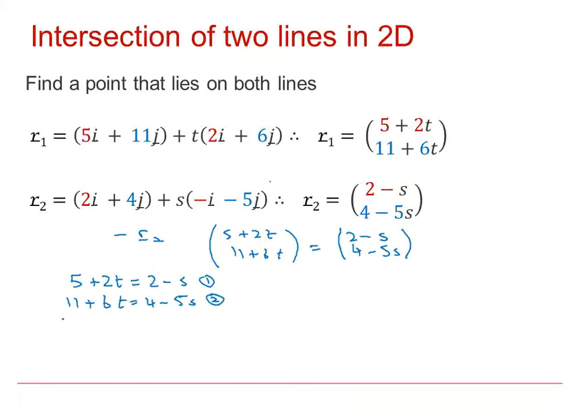Various ways of solving these simultaneous equations. I'm going to triple equation 1 to get 15 plus 6T is 6 minus 3S. And then I'm going to do equation 3, take away equation 2. So we've got 15 take away 11 is 4, 6T take away 6T cancels, 6 take away 4 is 2, and minus 3S minus minus 5S is plus 2S. So rearranging this, we get S is 1.